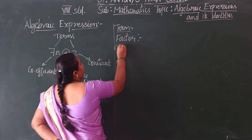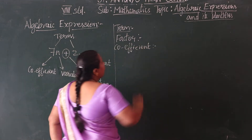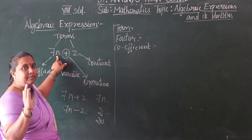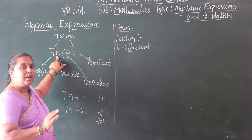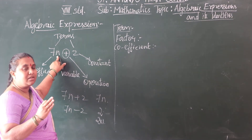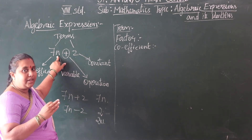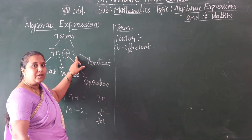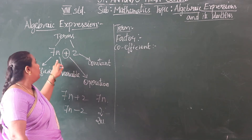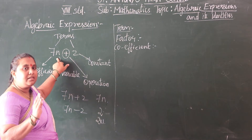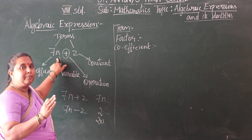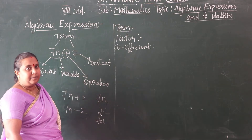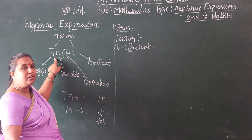Then we move on to coefficient. What is meant by coefficient? A numerical value multiplied by the variable in a term of an algebraic expression — the numbers which come before the variables — that we can say is the coefficient of the variable. In constants, without the variable terms, we don't have coefficients. So the coefficient of n in 7n plus 2 is 7.